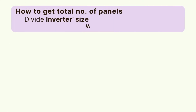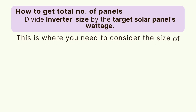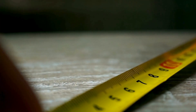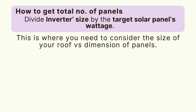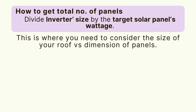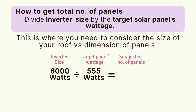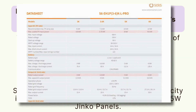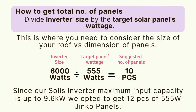Now that we have the inverter size, we can determine how many panels we need. We measured our roof and the panel dimensions to confirm they fit. We chose 555-watt Jinko panels. Dividing 6,000 watts by 555 watts, we need 10 pieces of 555-watt panels for a 6-kilowatt inverter.